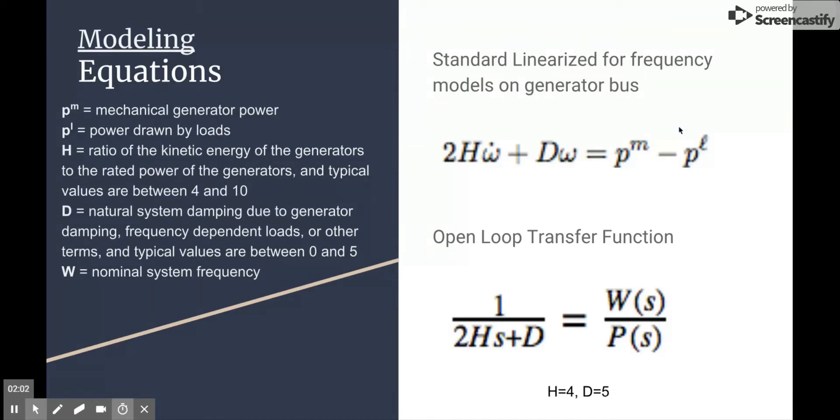Omega, the variable, is the nominal system frequency. The transfer function that we're interested in for this system is the new output frequency over the difference in power, meaning mechanical generated power minus the power drawn by loads. It's worth noting that the parameters we chose for this system, H and D, are 4 and 5, and we will discuss those later on.